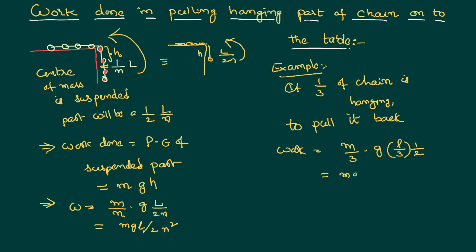The work done in this process is MgL/9 × 2, so it's nothing but equal to MgL/18. Of course, this also can be called as the potential energy of the suspended part. Alright. Thank you.